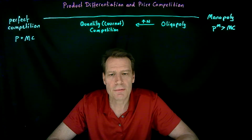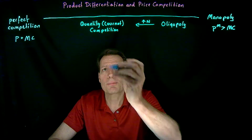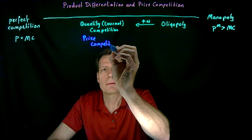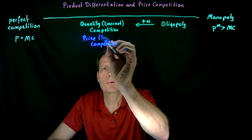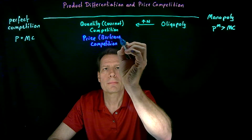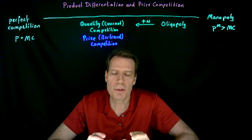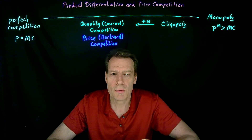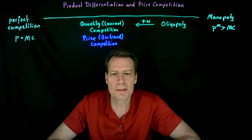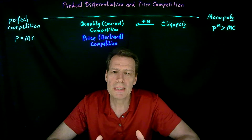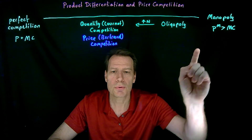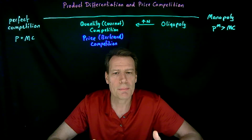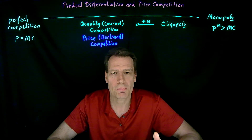There was a second kind of competition we also introduced: price competition, which we first introduced in the Bertrand model. The problem was that when we introduced price competition into an oligopoly, we found that as soon as there was a second firm in the industry, price became equal to marginal cost. So we immediately jumped, just by going from one firm to two firms, from perfect monopoly to the perfectly competitive outcome — and it didn't help us fill that continuum between monopoly and perfect competition.